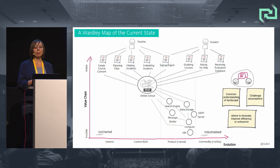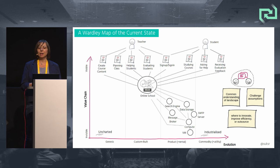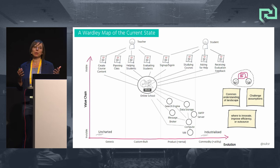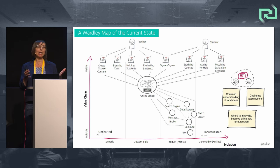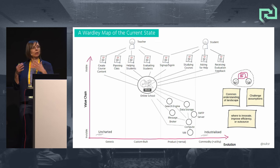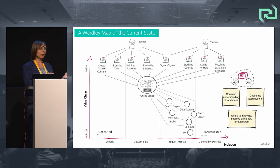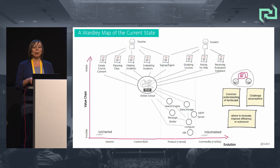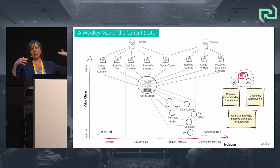The Wardley map itself provides a structured way to discuss and generate a common understanding of the landscape within a group, and also to challenge our own assumptions. The map helps us to identify areas where an organization can innovate, improve efficiency, or outsource to utility suppliers to gain competitive advantage — but that requires understanding the external forces that are impacting the landscape.